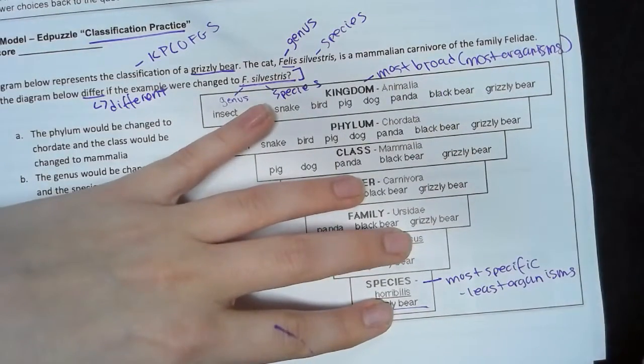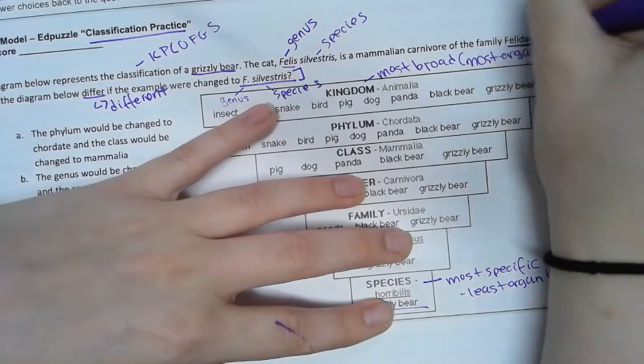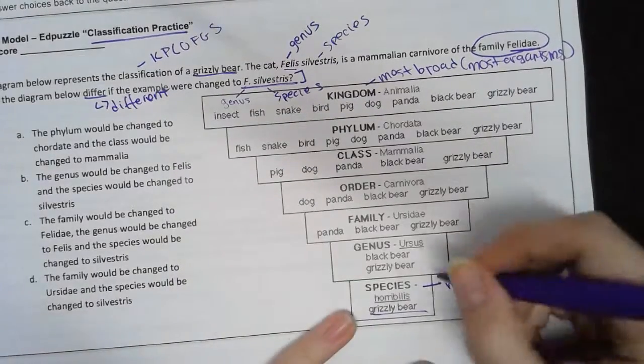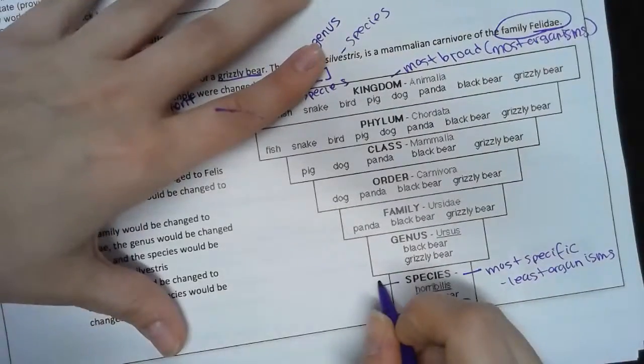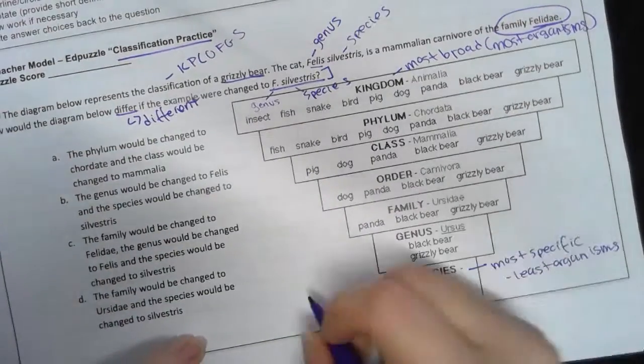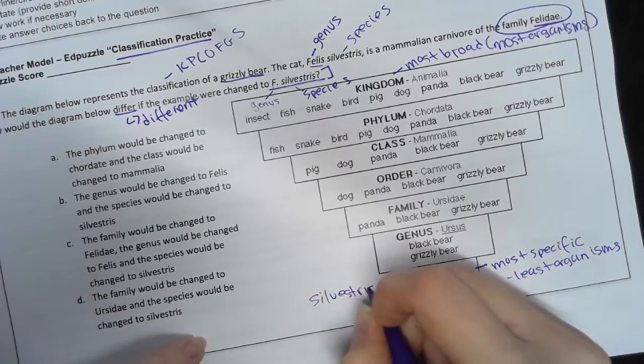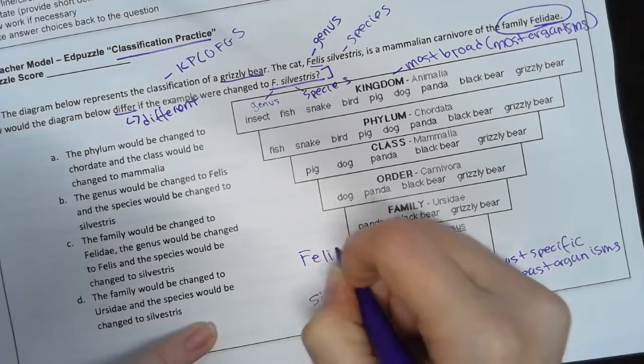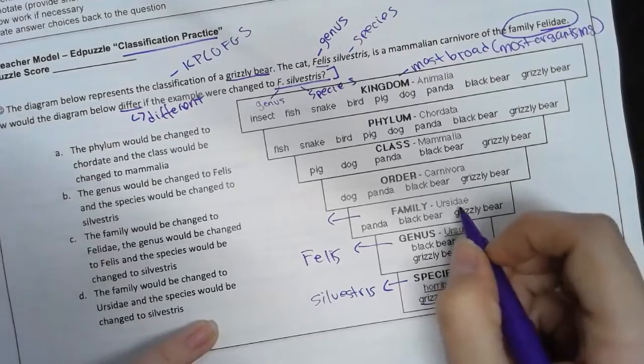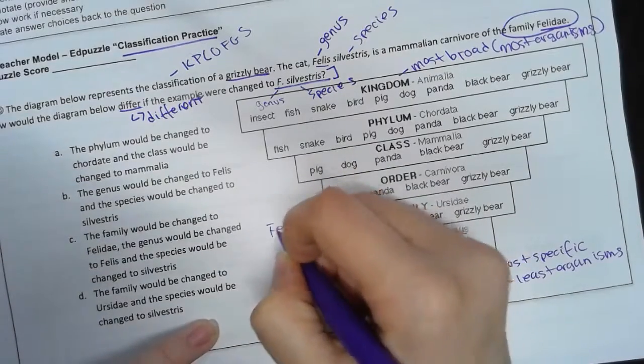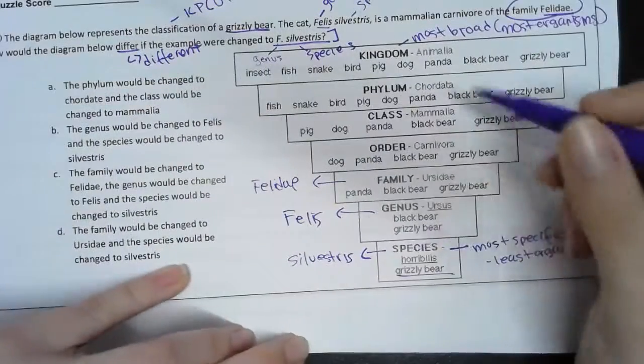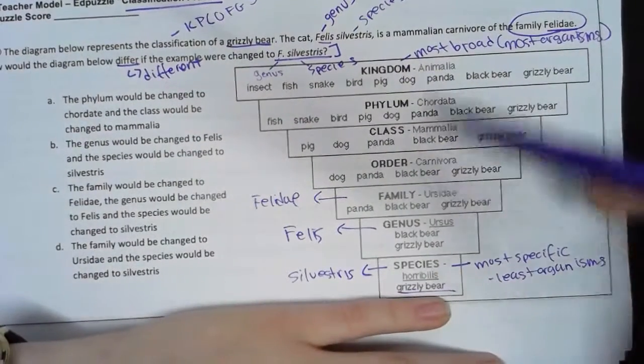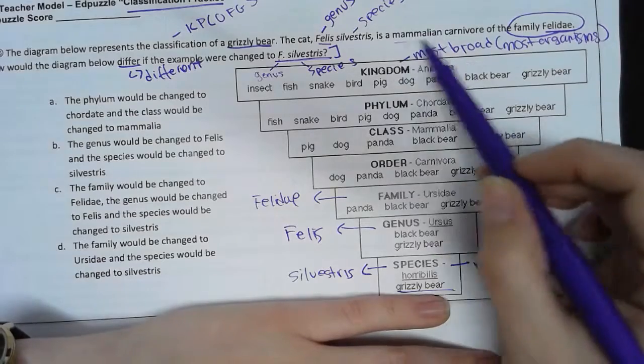Family Felidae - it told me that three things changed. The species is going to be Silvestris, the genus is going to be Felis (not Ursus), and the family is no longer Ursidae but Felidae. However, I don't know what the rest is going to be because they didn't tell me.